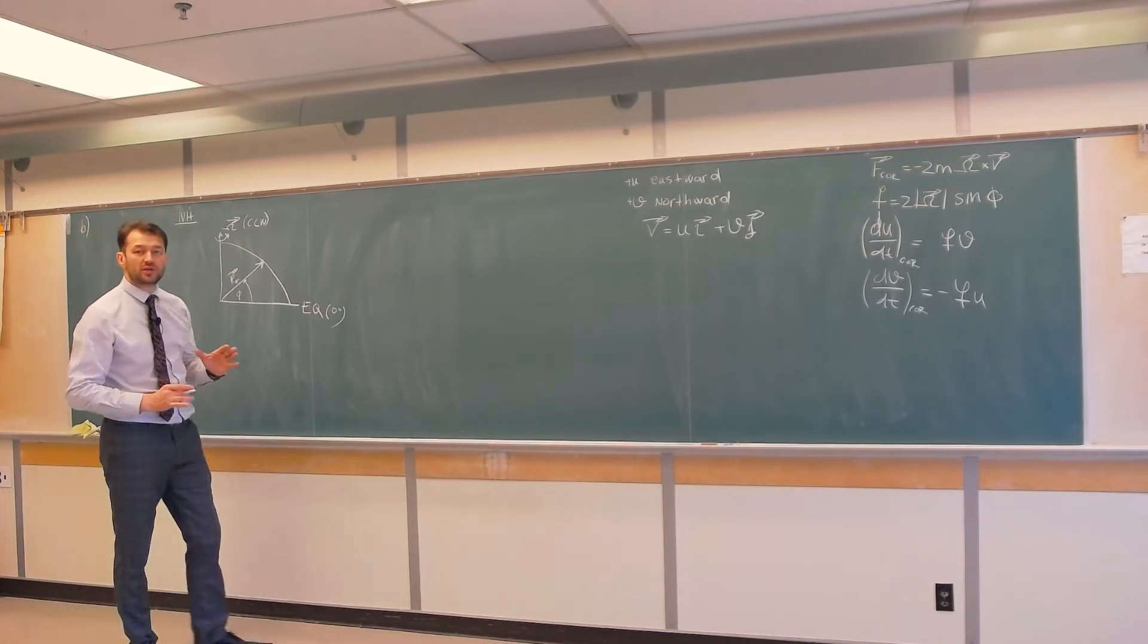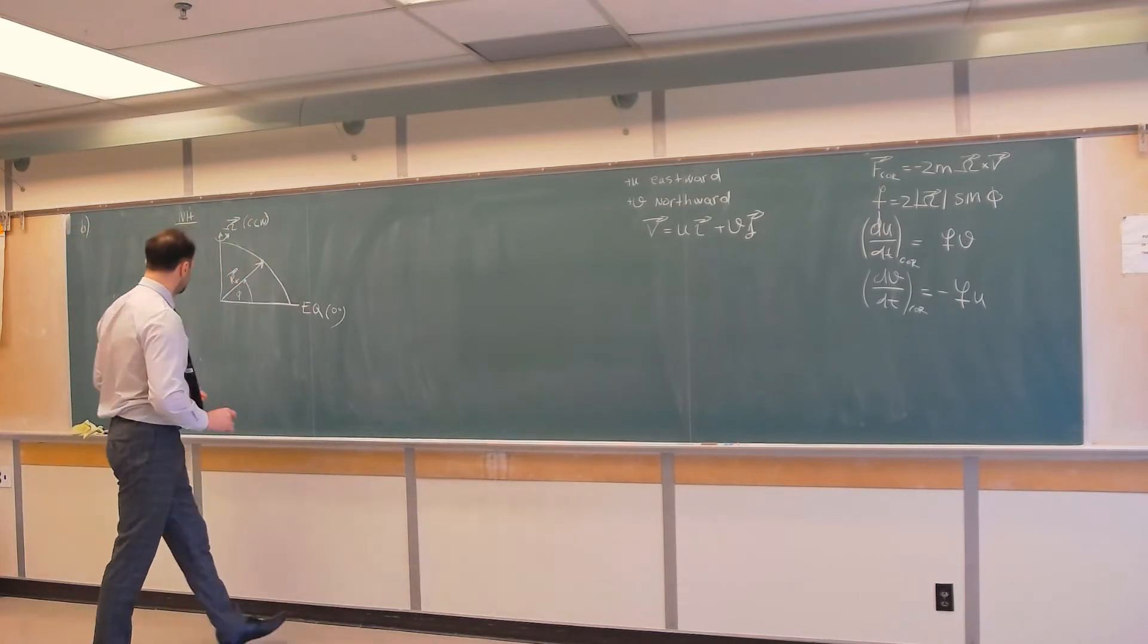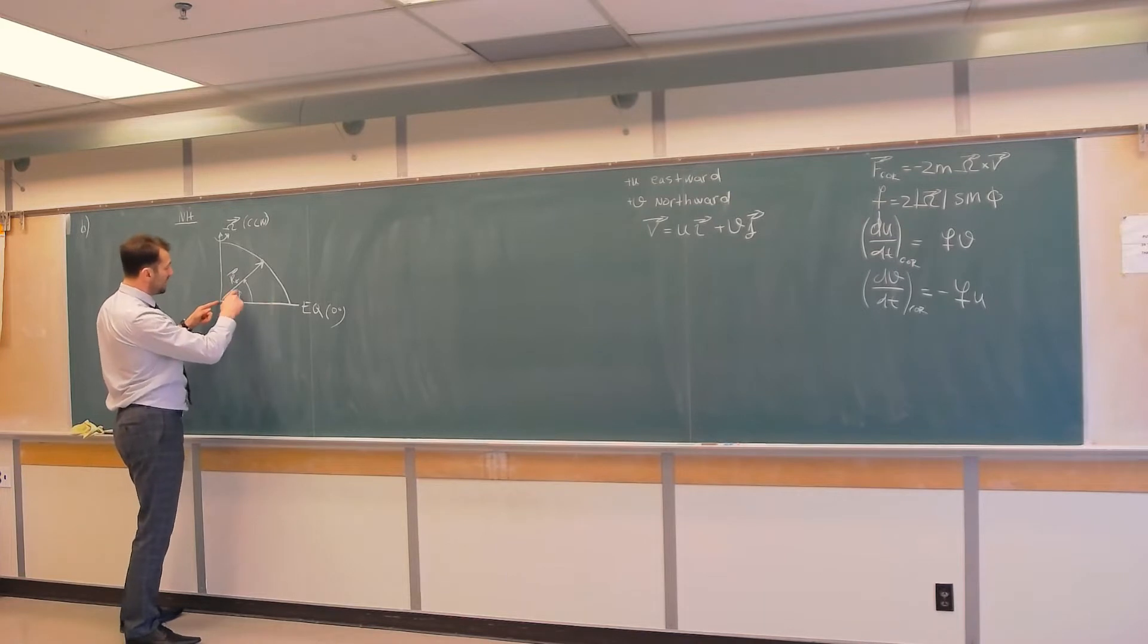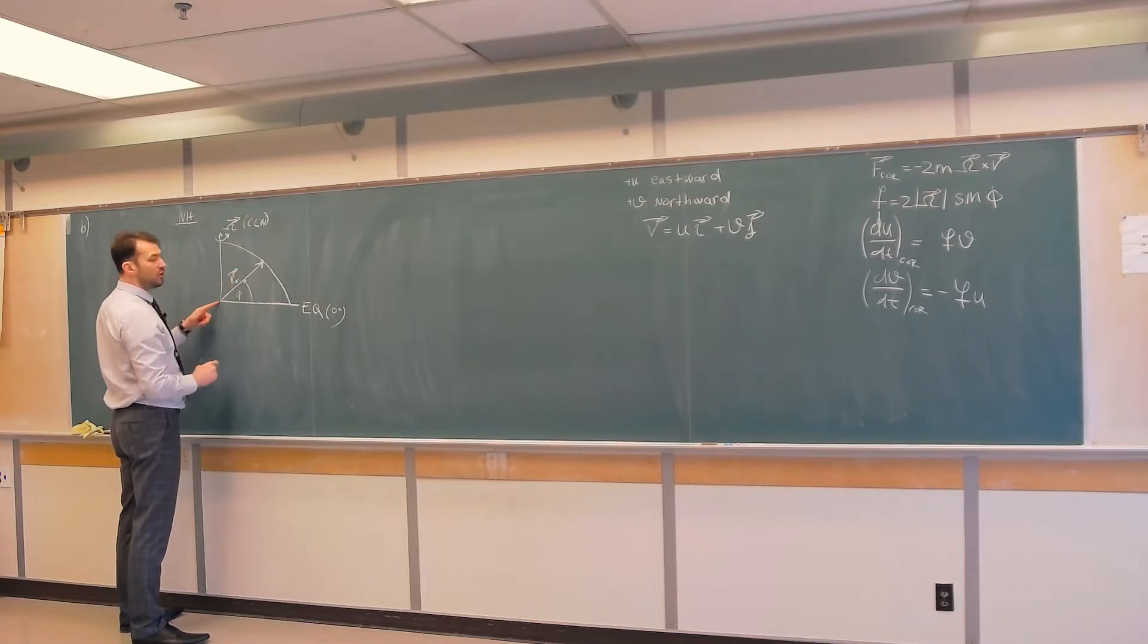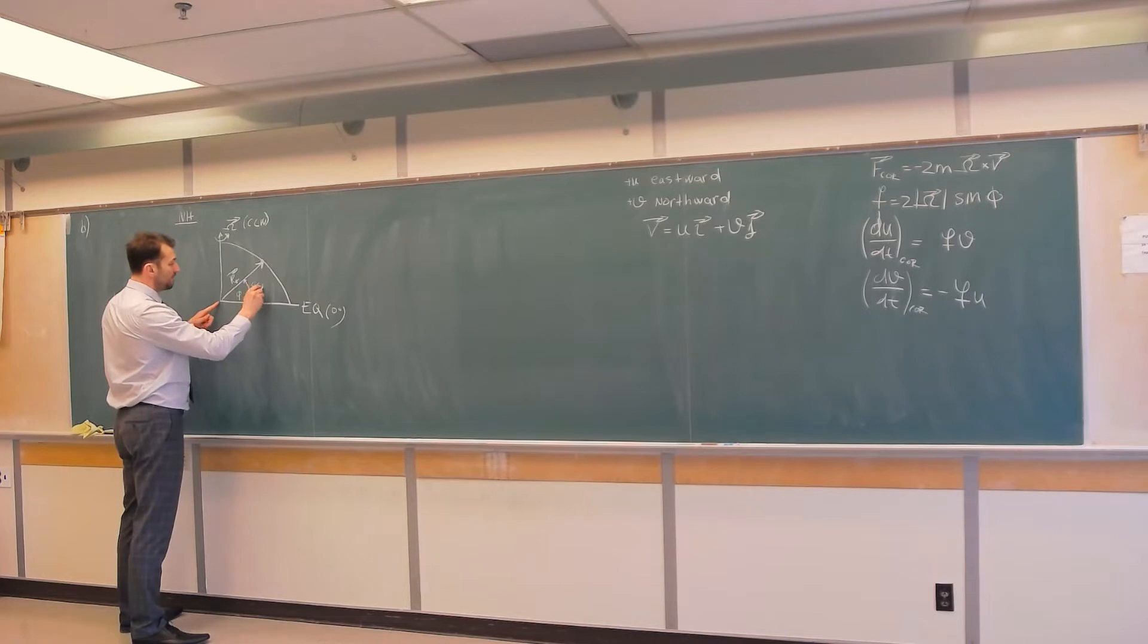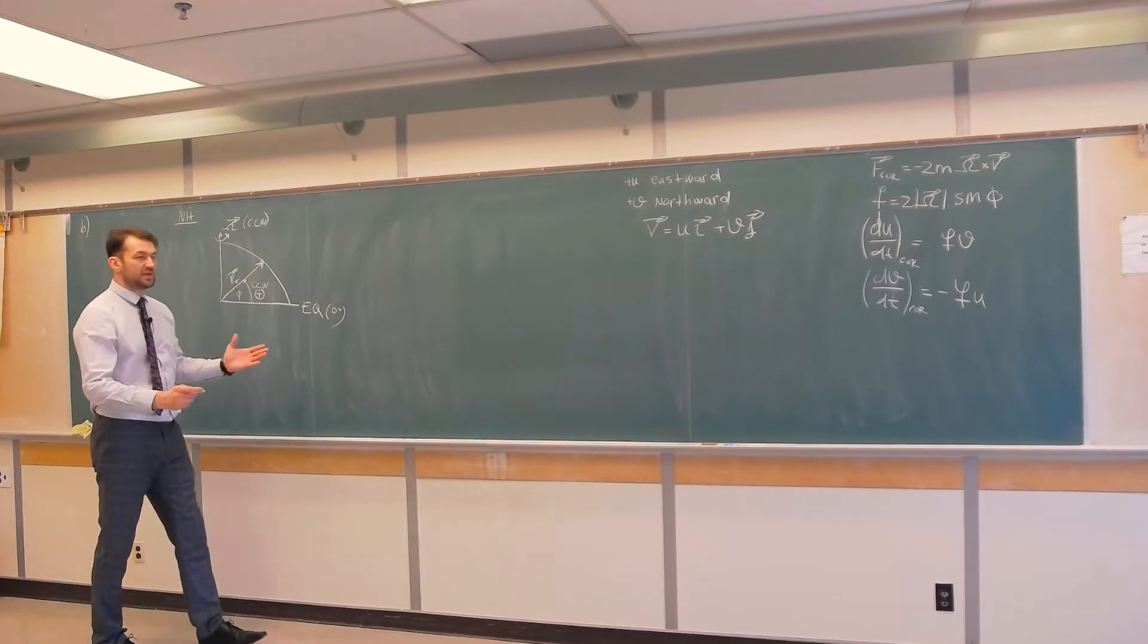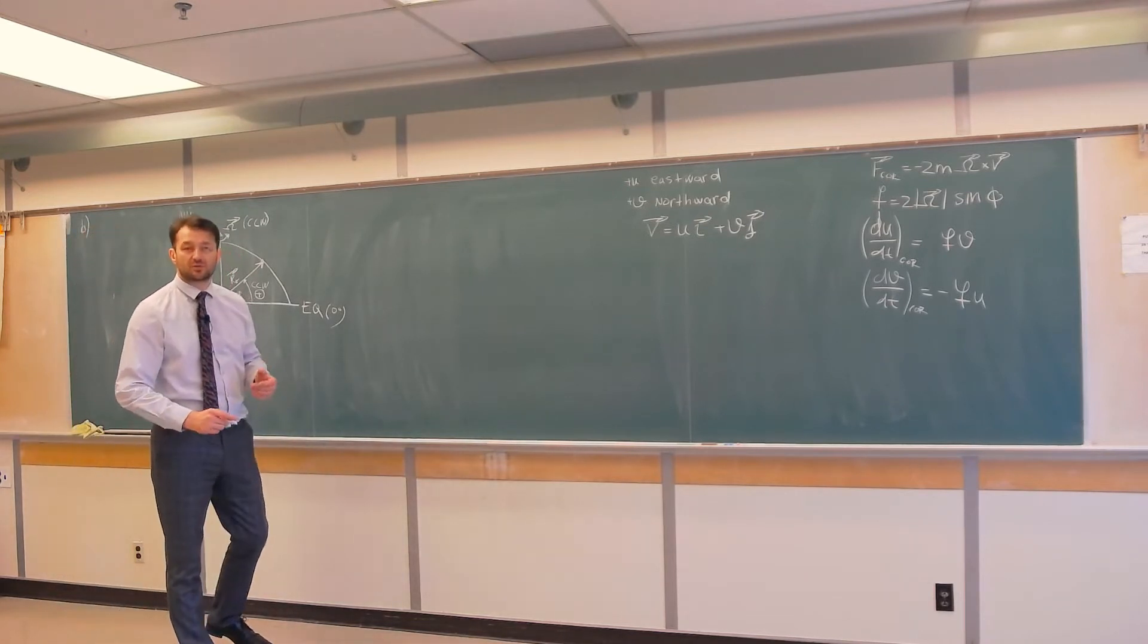First thing that you need to notice, which is very important, is that for the northern hemisphere, this angle that is measured, namely latitude, is measured from the equator in the counterclockwise direction. And counterclockwise direction is positive direction for an angle in mathematics. That's taken as a convention.